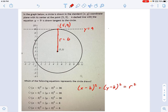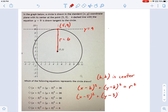And h comma k is the center. So let's just put our center into this equation and see what we get. We get x minus the x coordinate of the center, that's 5, plus y minus the y coordinate of the center, that's 3.